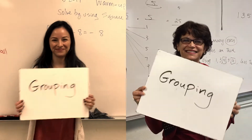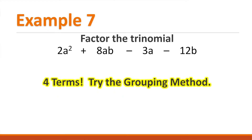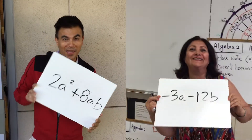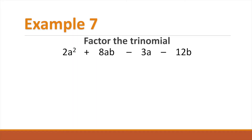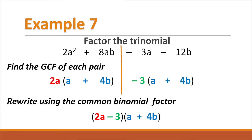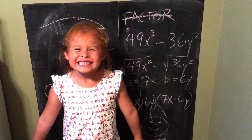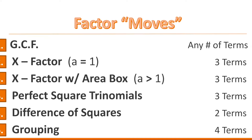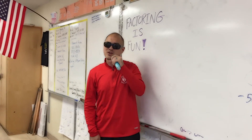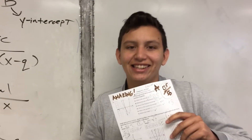The final factor move is what we call grouping. Only with 4 terms — yes, you gotta split and move things. That's right, you split the problem down the middle. Take the GCF of each pair, solve the factor riddle. Now that I've given you these factor moves, you won't take no L's — at math you'll never lose.